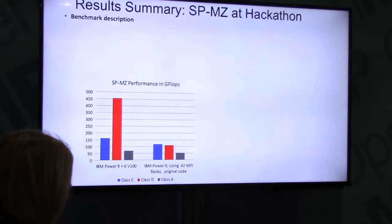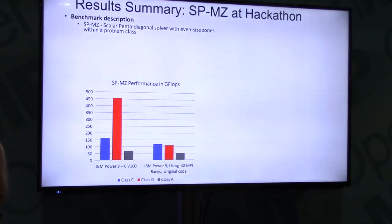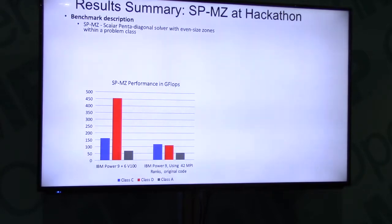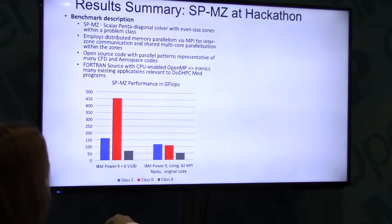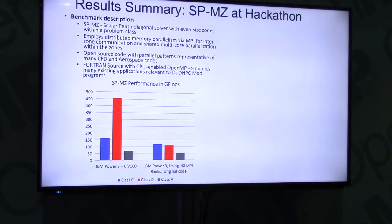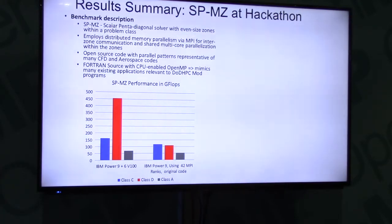The benchmark is SPMZ, which is a scalar pentadiagonal solver — the multi-zone solver — which means it also includes MPI for interzone communication alongside shared multi-core parallelization. It's an open source code, which made it very easy to work on the source without any restrictions. The parallel patterns in this code are representative of a lot of modern CFD codes.